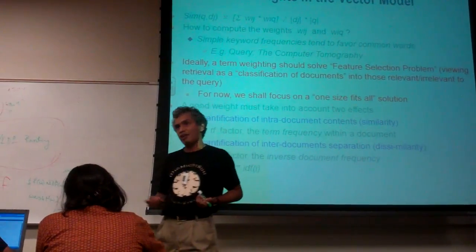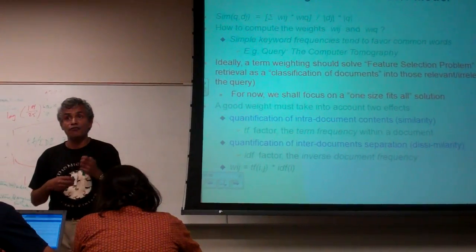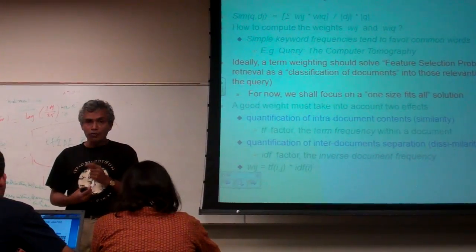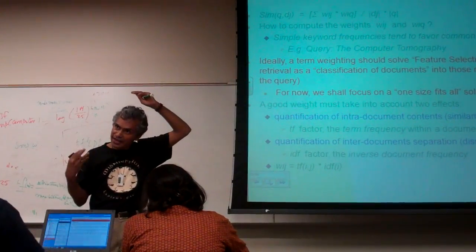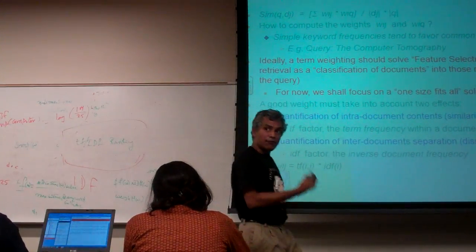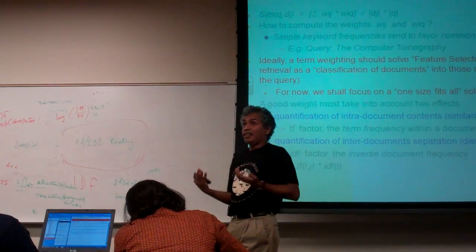And that depends on both the inverse document frequency and the term frequency. And you compute both of them, multiply one by the other, you get TF-IDF weight. Now you would write the document in the TF-IDF weight form. So it's now still a vector, just a vector with different weights.